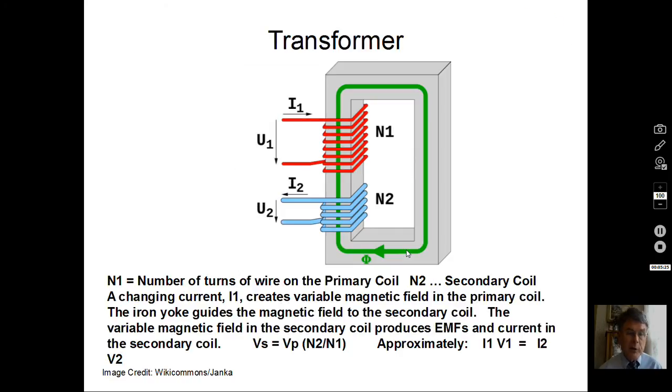So how do transformers operate? A transformer uses Faraday's law of induced EMF. And we have two coils electrically not connected. So there's insulating material in these wires. But we have a variable current, alternating current, coming into coil one. I'll call this the primary coil, coil one.